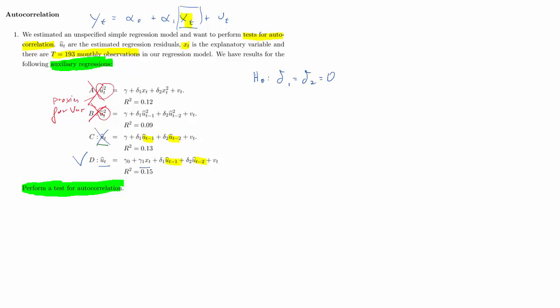Therefore our null hypothesis is going to be that delta one and delta two are equal to zero. If that was the case there would be no autocorrelation. If however either delta one and or delta two are unequal to zero, then we would have an issue of autocorrelation. These deltas describe whether the ut hat is correlated with the ut minus one hat and or the ut minus two hat.